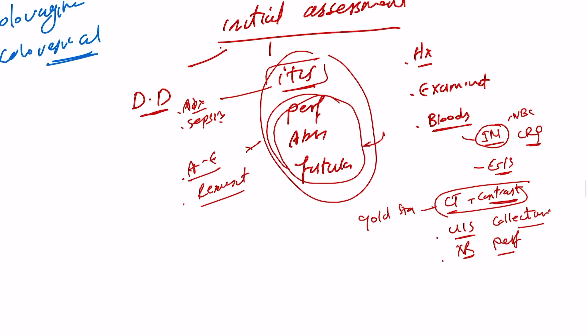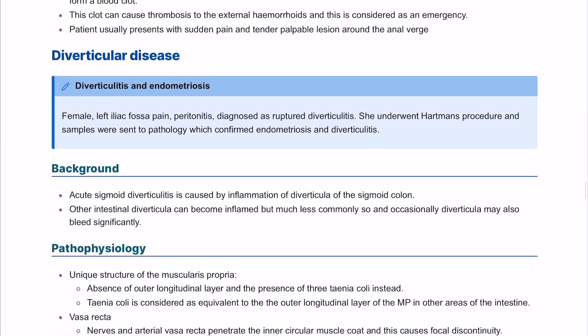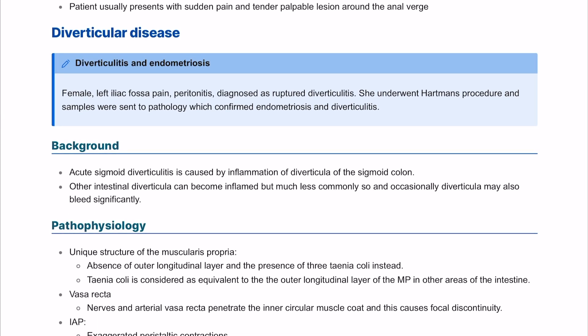So this is diverticulitis or diverticular disease. If we go to the stem, so we have a female patient coming with left iliac fossa pain, peritonitis, diagnosed as ruptured or perforated diverticulitis. She had a procedure called Hartman procedure, and this is when we do some sort of resection, left hemicolectomy, and do a temporary stoma that can be reversed later on.